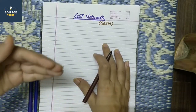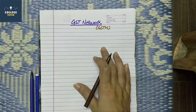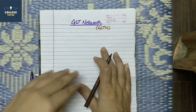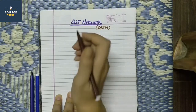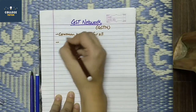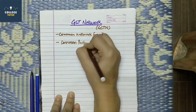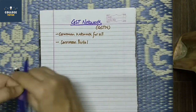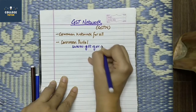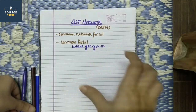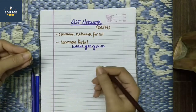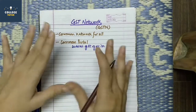Taxpayers can create an account, pay tax, ascertain tax, and access all related information through GSTN. It is a common network for all. There is a common portal where all taxpayers and all stakeholders can go to perform all their GST-related activities.